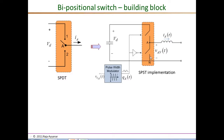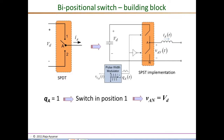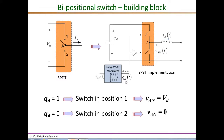To complete the building block, we have the bi-positional switch with these two constraints and the pulse width modulator, which converts the control voltage to switching pulses. The convention is that if Q is one, the top switch is on and pole A is connected to the positive end of the DC voltage, making V_AN equal to V_D. When Q is zero, the bottom switch is on and V_AN is zero.